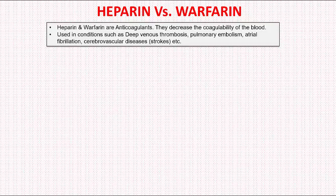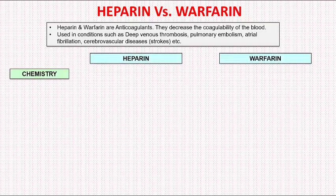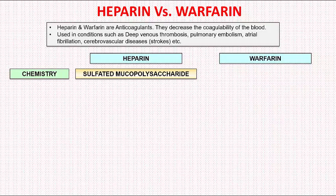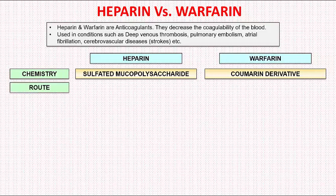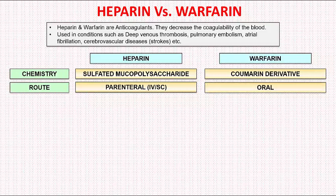Now let us go through the differences. First, heparin is a mixture of sulphated mucopolysaccharides. It is commercially prepared from ox lung or pig intestinal mucosa. Warfarin, on the other hand, is a coumarin derivative. Next is the route of administration: heparin is given parenterally while warfarin is given orally. Heparin is given either intravenously or subcutaneously. Heparin should never be given intramuscularly because of the risk of hematoma formation at the injection site.